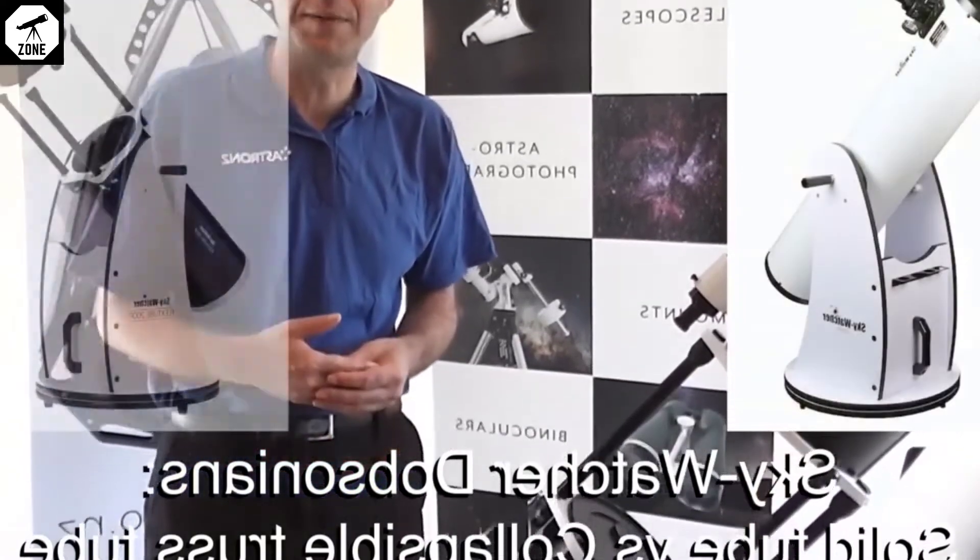The Skywatcher Dobsonians come in two variants, solid tube and a collapsible truss tube.